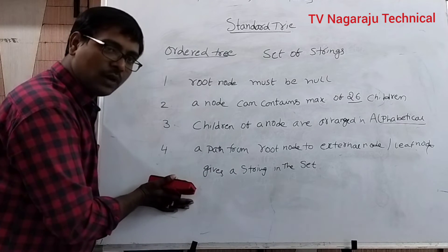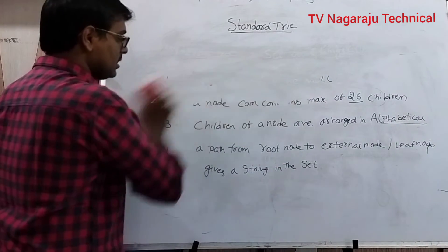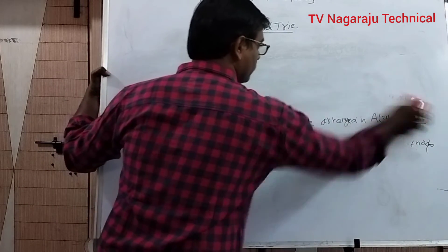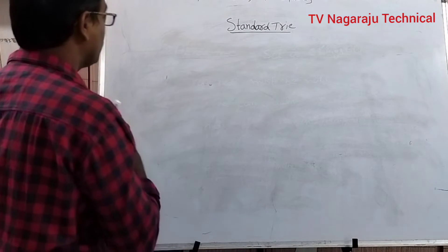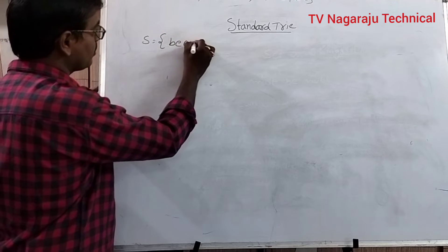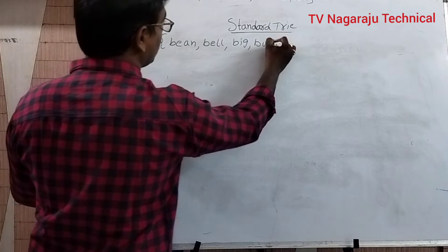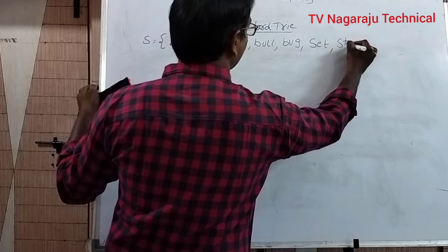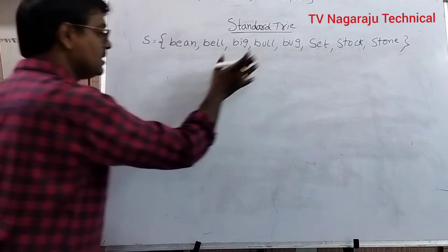Now we will discuss one example of how to construct a standard trie. Consider a set of strings: Bean, Well, Big, Bull, But, Set, Star, Stone. These are the strings we will use.